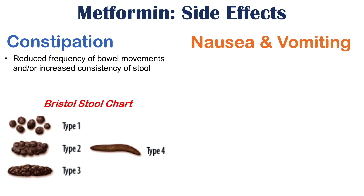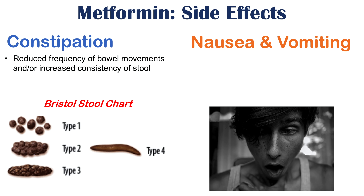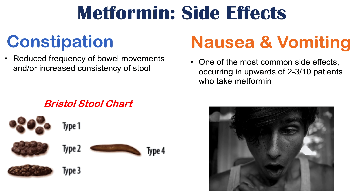Metformin can also cause nausea and vomiting, which is actually one of the most common side effects, occurring in upwards of 2 to 3 in 10 patients — roughly 30% of patients will experience nausea and vomiting. So the most common symptoms overall are diarrhea, abdominal pain, and nausea and vomiting.